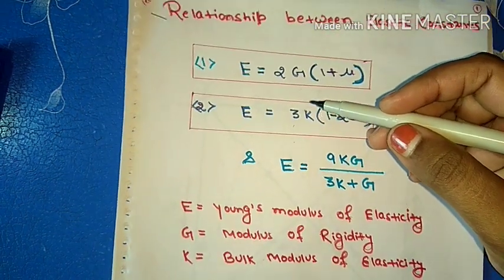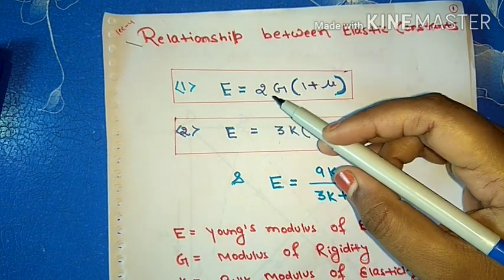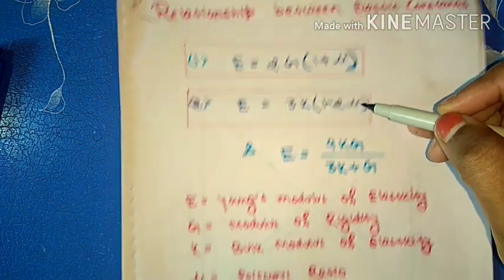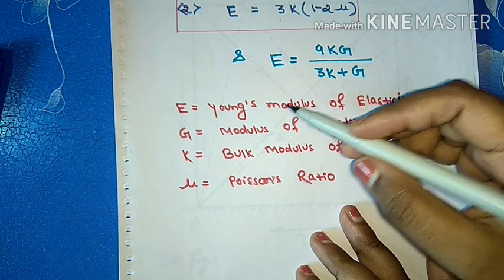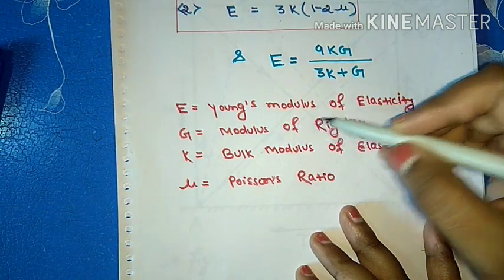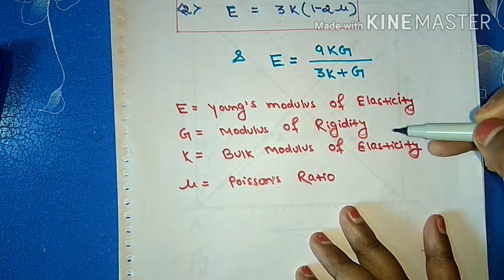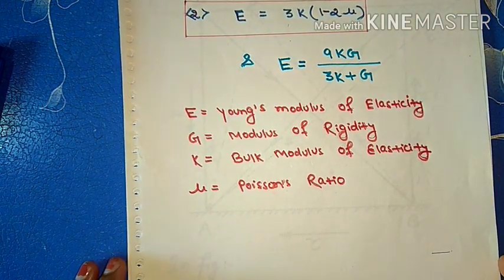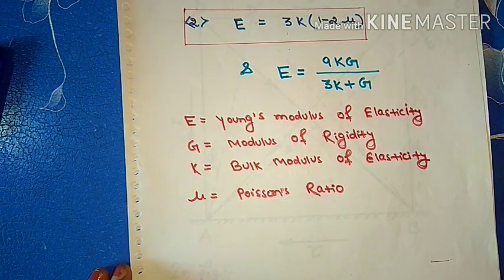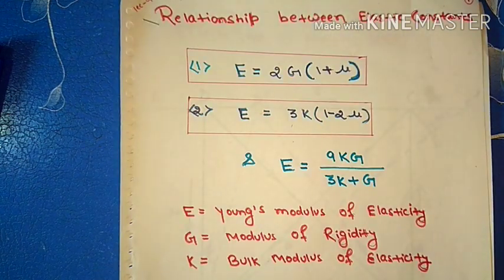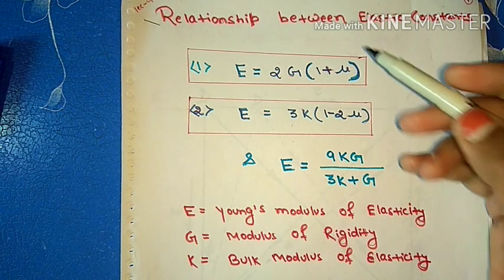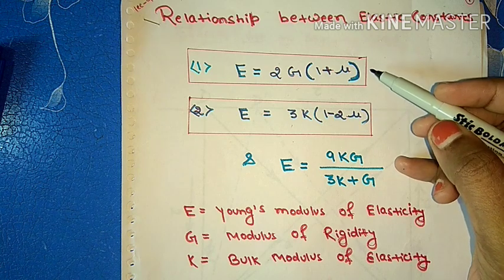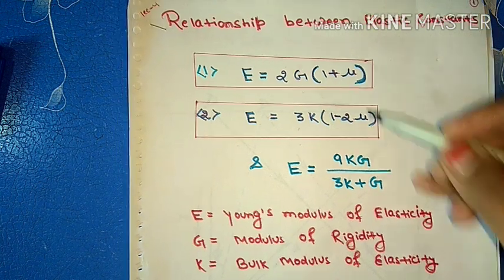We know from the last two lectures that E is equal to 2G(1 plus mu) and E equal to 3K(1 minus 2mu). Where E equals Young's modulus of elasticity, G equals modulus of rigidity, K equals Bulk's modulus of elasticity, and mu equals Poisson's ratio. The relation between E, G and K can be established by eliminating mu from equation 1 and equation 2.